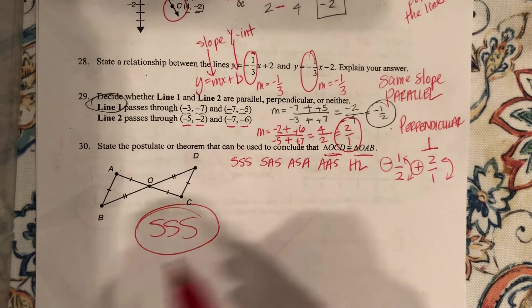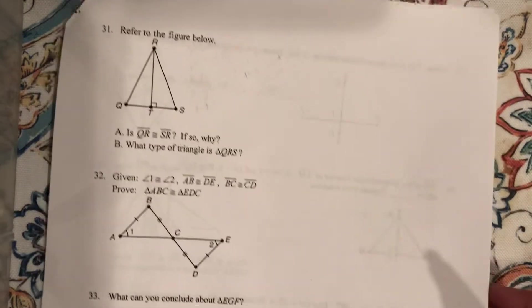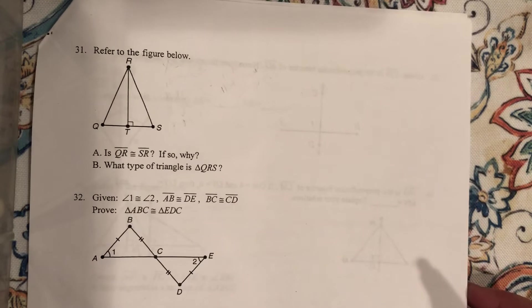By side, side, side, I've proven that these two triangles have matching sides, so they're congruent to each other. So, okay, all right, so let's move it along here. All right, 31.